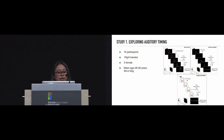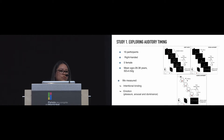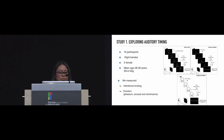In our study, 16 participants took part — right-handed, five female. We compared the three timing types and measured intentional binding as a marker of the sense of agency. Additionally, we measured subjective emotion responses using a questionnaire covering three dimensions of emotion: pleasure, arousal, and dominance. This was to measure user experience, as it is useful to compare the quantitative and qualitative subjective measures.